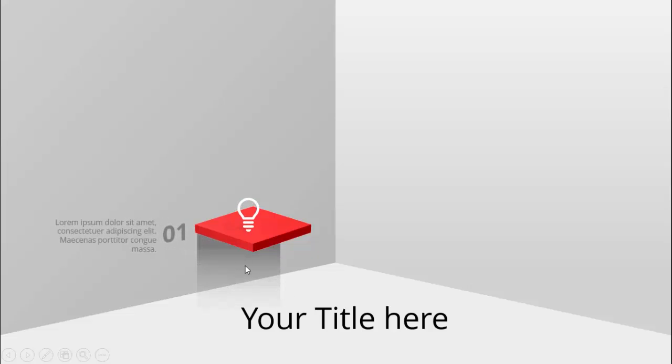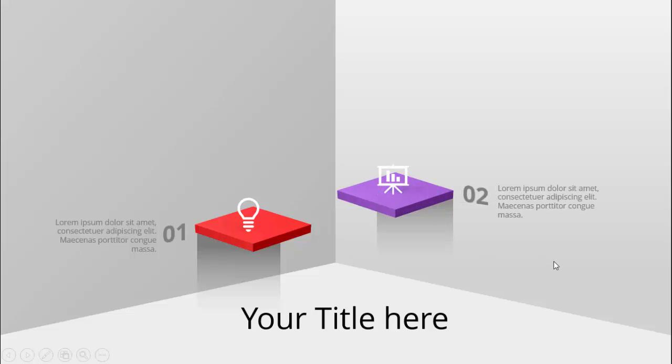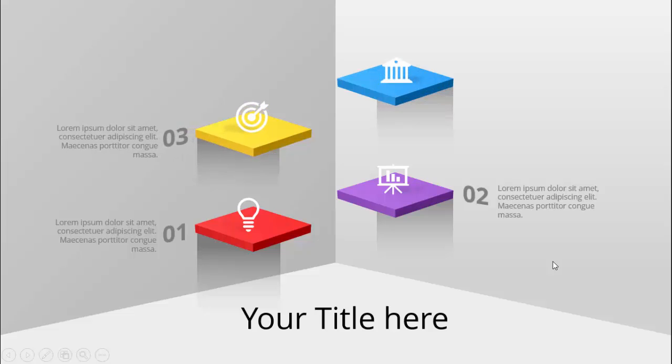In today's tutorial I'm going to show you how to create a 5-step 3D infographic slide in PowerPoint. As you can see, I've created this 3D type and you can add your title here. When I click, the first step comes — a 3D shelf with an icon and shadow. You can add your option number and detailed text. Each click reveals option 2, option 3, option 4, and option 5, each with a different color.